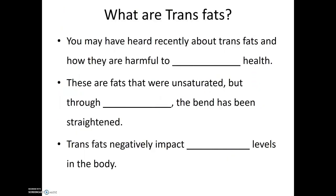You may have heard about trans fats and how they are harmful to cardiovascular health. Trans fats are fats that had been unsaturated, but then through chemical processing the bend has been straightened. A trans fat still has a carbon-carbon double bond, but because that double bond has been straightened or made linear, these molecules are more likely to be solid at room temperature and have a thicker texture than unsaturated fats. Trans fats don't actually exist in nature — this is an example of humans taking naturally occurring unsaturated fats and processing them to give them new properties.